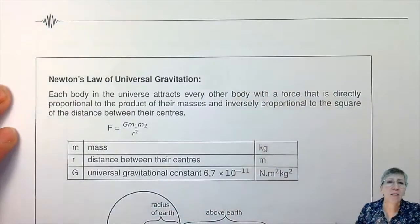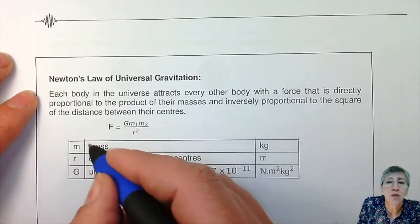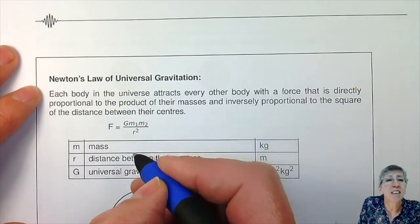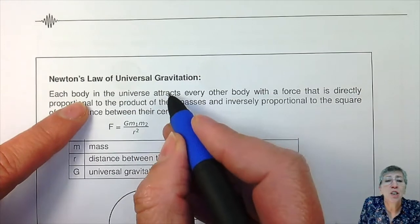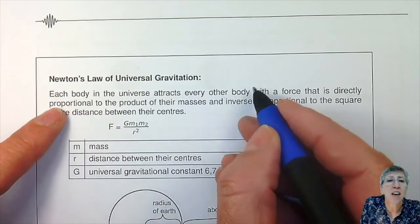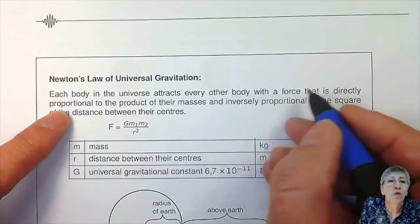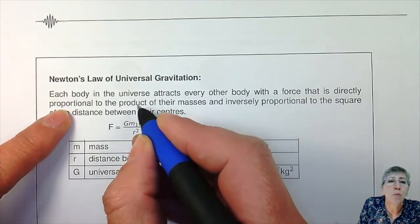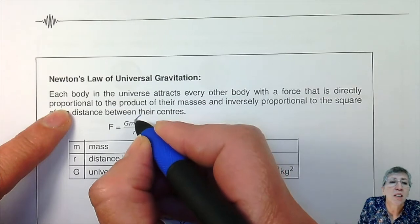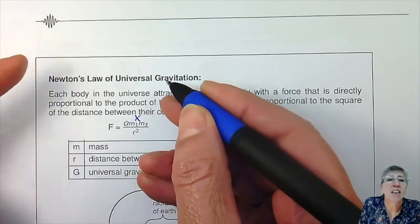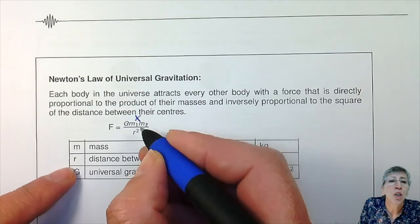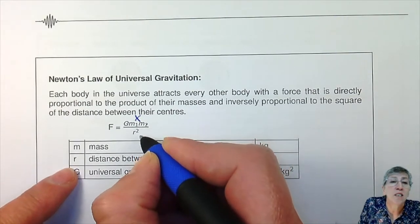We have now finished with Newton's laws of motion and we're moving on to Newton's universal gravitational law. When you think about this one, the expression or equation representing it means that every body in the universe attracts every other body with a force that is directly proportional to the product of their masses and inversely proportional to the square of the distance between the centers.